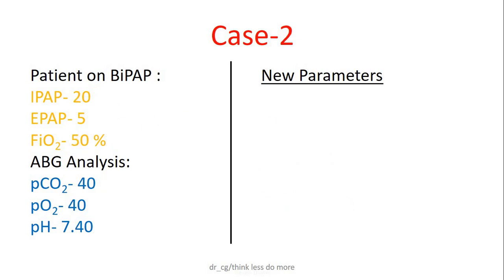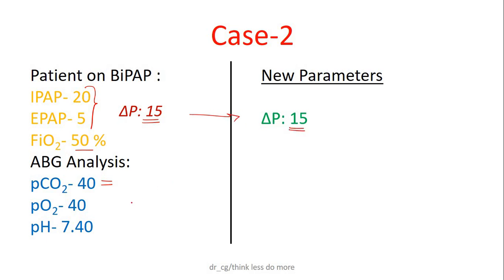Now the second case. Here we can see IPAP is 20, EPAP is just 5, so current pressure difference is 20 minus 5, which is 15. Here FiO2 is 50%, so it is on the lower side, meaning we can increase it if required. Now first see PCO2 level — here it is 40, meaning it is almost normal. So we don't have to change the pressure difference; our new pressure difference should remain the same as the older one, which is 15.